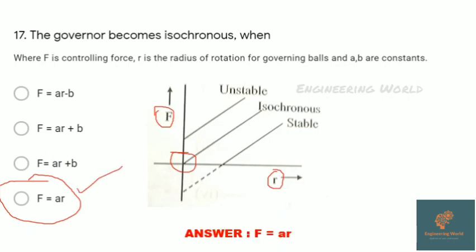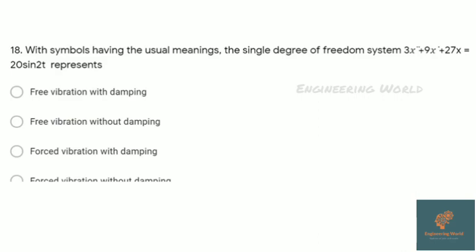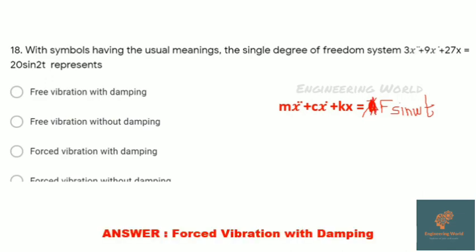With the symbols having usual meaning, the single degree of freedom system 3ẍ + 9ẋ + 27x = 20sin2t represents? Given equation is mẍ + cẋ + kx = Fsin(ωt). Here c is present, so damper is present. F is also given, so it's a forcing function. It is a forced vibration with damping. The correct answer is forced vibration with damping.